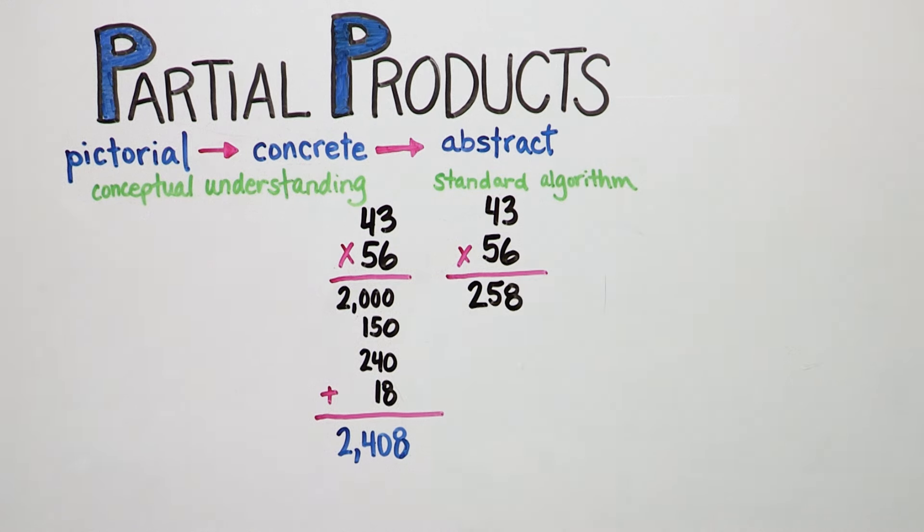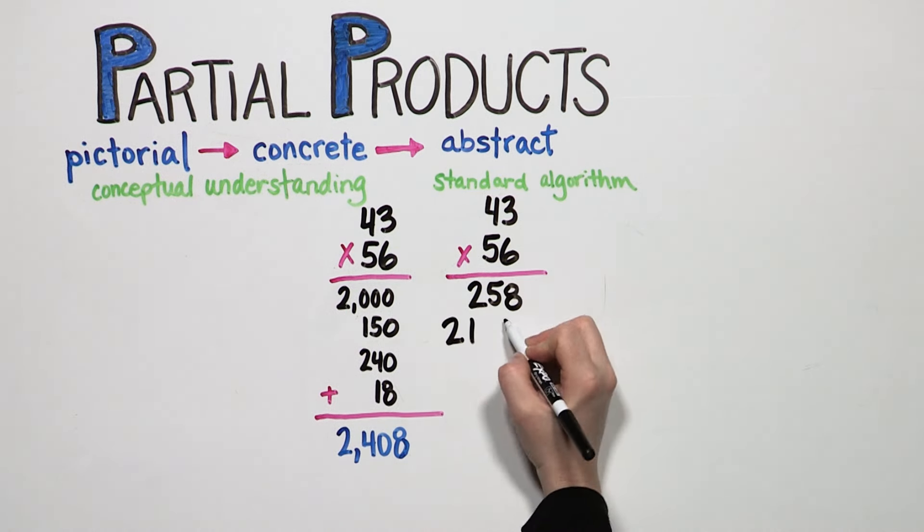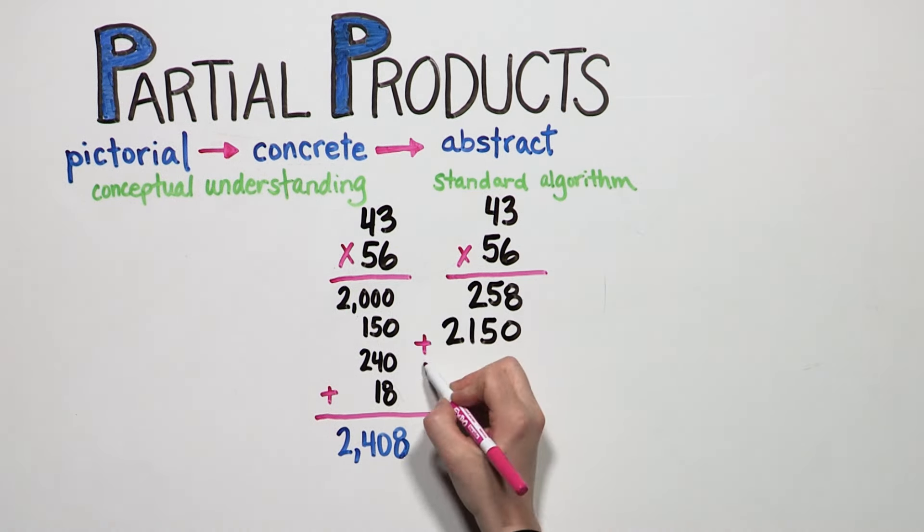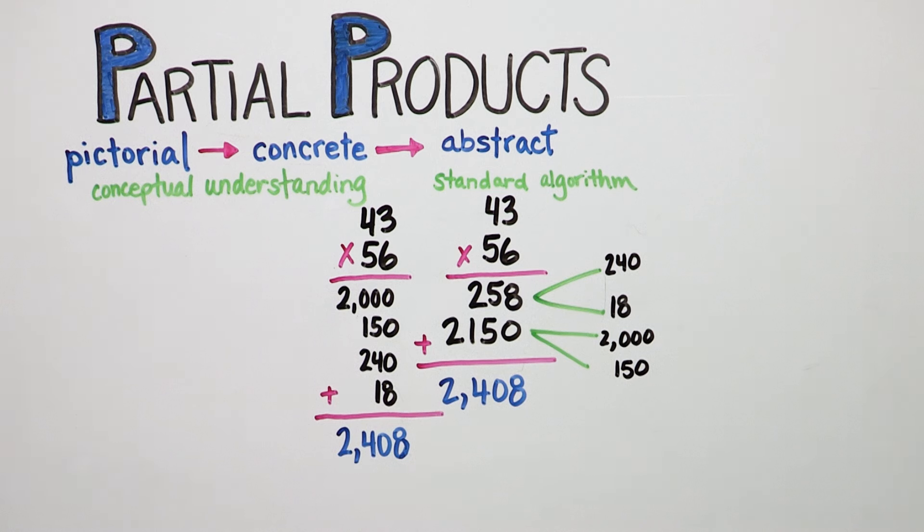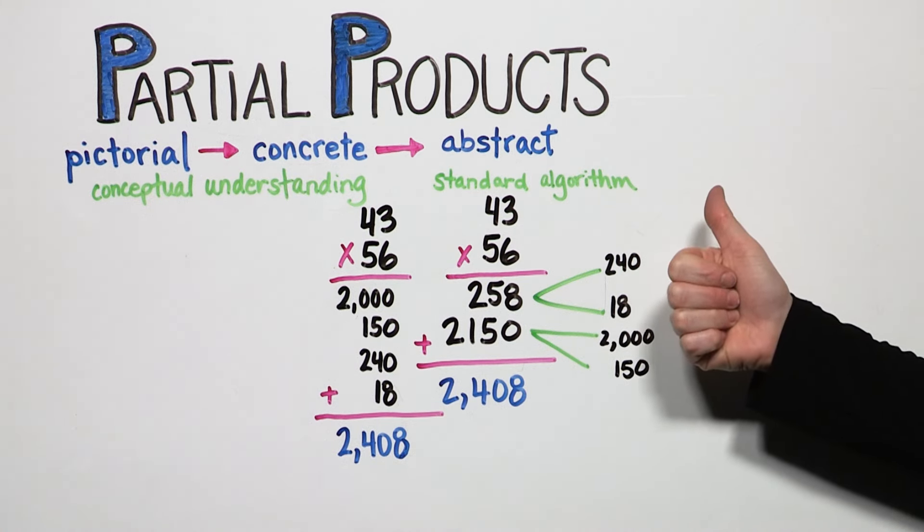The standard algorithm has fewer lines of work because your child has a greater understanding of what she's multiplying. Your child knows the actual value of these products because she has a strong understanding of partial products. And that's good to know.